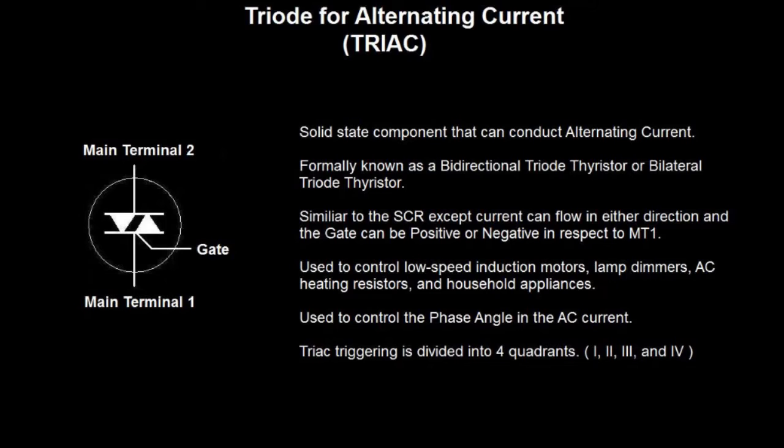These are used often in phase angle controls in alternating current, and what this is is the ability to turn on the TRIAC at different points in the cycle. For instance, if the TRIAC was turned on during the rise of the voltage and current cycle, then the device will have more power.